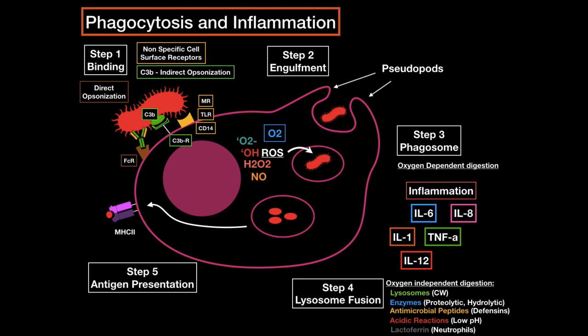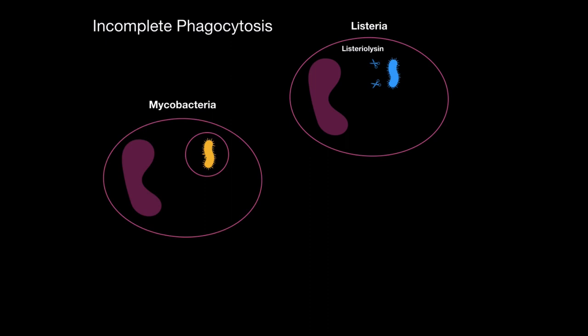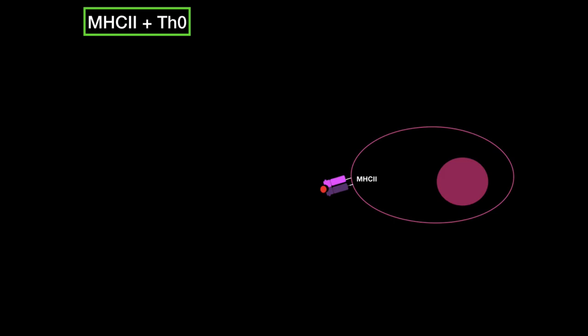That is mainly the process of phagocytosis and how the macrophage causes inflammation. This type of phagocytosis is called complete phagocytosis. We also have something called incomplete phagocytosis, when the bacteria actually escapes the phagocytosis process and is not killed. Take the bacterium Listeria, for example — during formation of the phagosome, it can release enzymes called listeriolysin that can break the endosomal membrane so it survives. Other examples are mycobacteria, which can release catalase to neutralize hydrogen peroxide. So keep that in mind: tricky bacteria can result in incomplete phagocytosis.